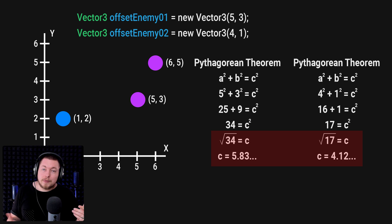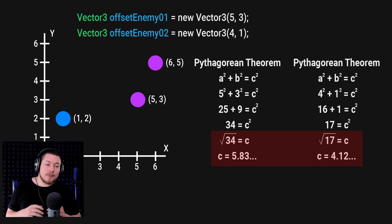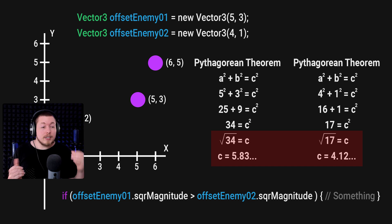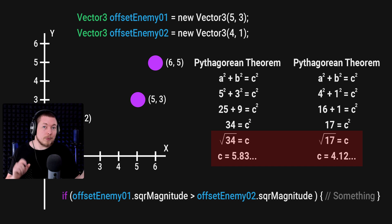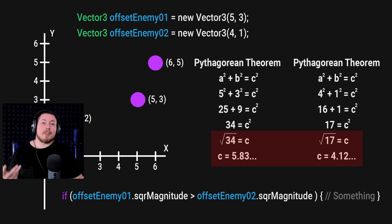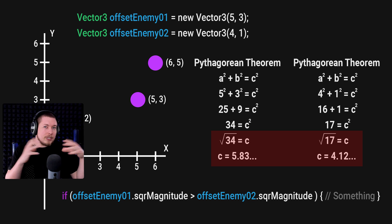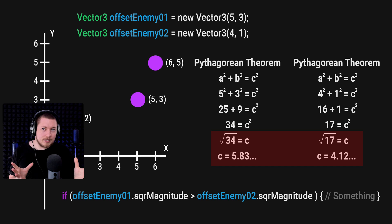To give a practical example using an if statement: if offsetEnemyOne.sqrMagnitude is greater than offsetEnemyTwo.sqrMagnitude, then do something. That would execute something if the first enemy is closer to me than the second. This means we can still perform meaningful comparisons inside our code without calculating the exact distance.